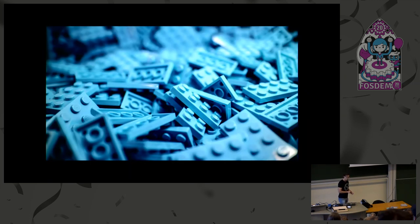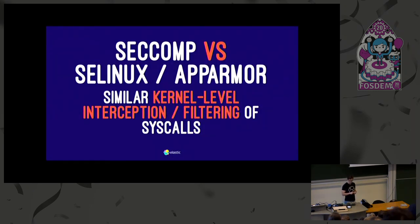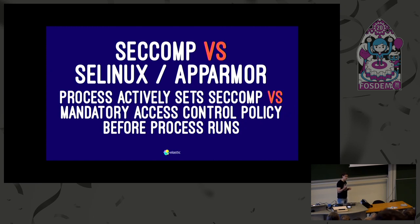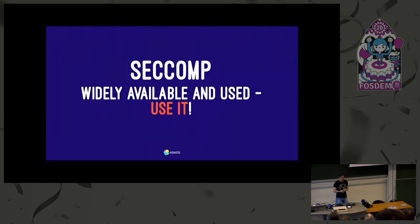To wrap up, it's always kind of Lego security — there's not just one block you need to put in, but many blocks you need to combine to have better security, and SecComp is just one of these little building blocks. Sometimes people ask how it compares to SELinux or AppArmor. All these approaches are kernel-level filters or interceptors. The main difference is that SecComp is where the process actively sets that — the application developer rolls it out with the application — versus setting it mandatorily before the application is even started, which is what SELinux and AppArmor are doing. It is widely available, and hopefully all your kernel versions support that.